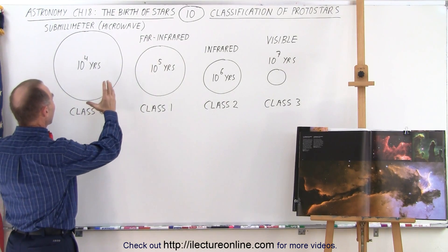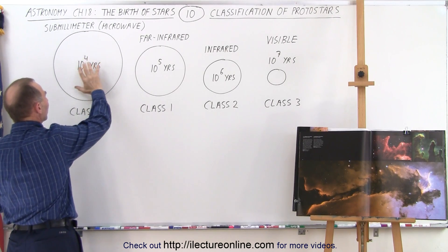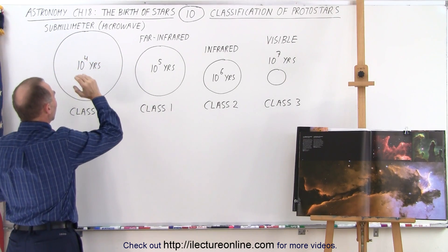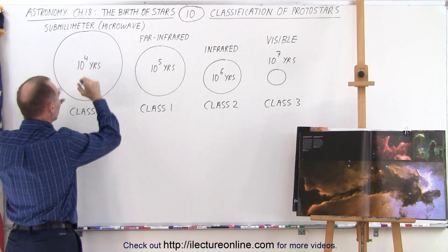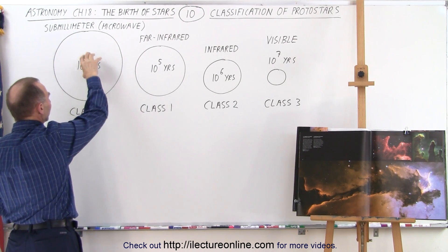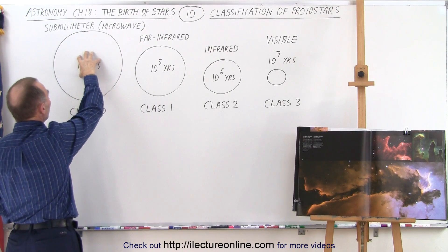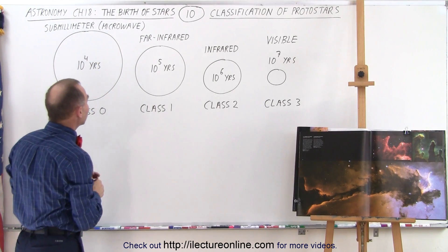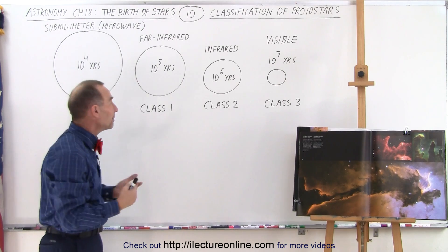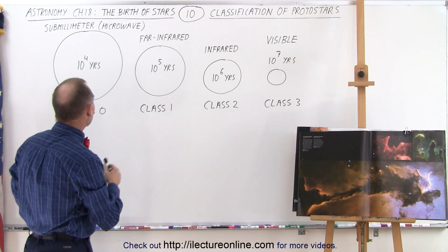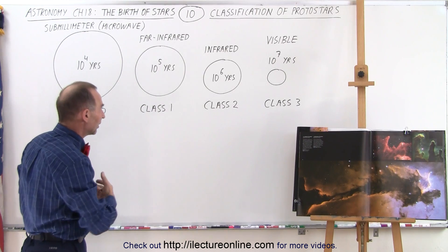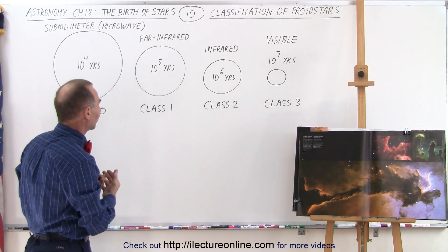Class zero is where we have just the buildup of heat at the center as the density is increasing. The heat is being built up because of the pressure and the mass that starts to turn into a protostar puts out radiation at the microwave, or what we call sub-millimeter wavelength rate. It's basically the kind of radiation you'd expect from a microwave — can't see it, it's not visible yet.